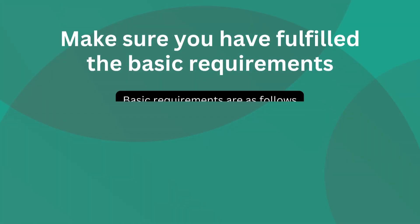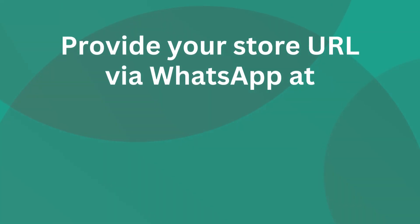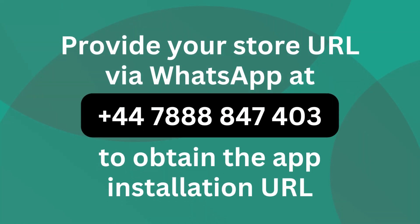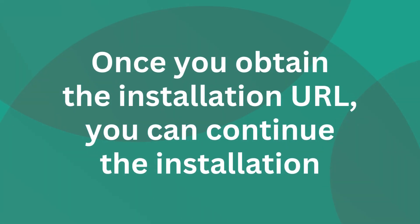Make sure you have fulfilled the basic requirements: an active Shopify store, an active Stripe account, and PromptPay payment enabled in the Stripe account. Provide your store URL via WhatsApp to obtain the app installation URL. Once you obtain the installation URL, you can continue the installation.